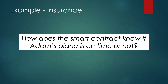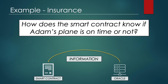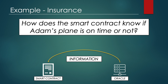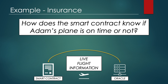But how does the smart contract know if Adam's plane is on time or not? They use a system called Oracle, which is a third-party service that provides smart contracts with external information. They basically serve as bridges between blockchain and the outside world. I'll speak about oracles in detail in my next video. For now, all you need to know is that the Oracle feeds the smart contract with real-time flight information. This information allows the smart contract to determine whether the flight was on time or late and allow for its execution.